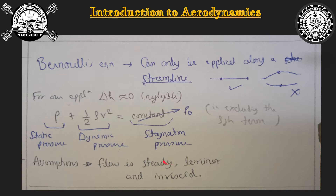Inviscid means viscous effects are neglected. Along with steady flow, there is also a type called uniform flow — while steady is invariant with time, uniform means invariant with position, so every place the flow remains the same.